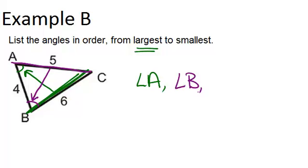And therefore, the smallest angle is across from the smallest side of 4, and that's angle C. So, the largest angle is across from the largest side, and the smallest angle is across from the smallest side.